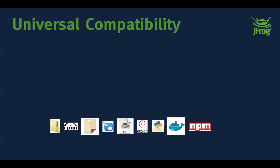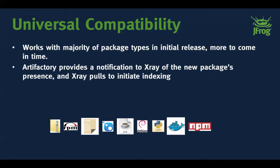X-Ray does all of this regardless of package type. As you can see on screen, we support NPM, Docker, OS packages from Debian, Ubuntu, and Red Hat, JAR files, Maven packages, RPM packages, NuGet packages, and more. Customers are really happy with this broad support. It's not just about support — it's about compatibility that lets you do any kind of build or platform modification and have X-Ray scan and index those things, creating comprehensive component graphs for full insight.